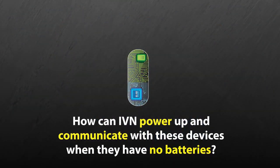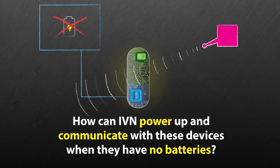So, how can IVN power up and communicate with these devices when they have no batteries?